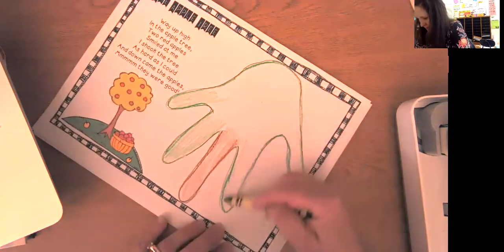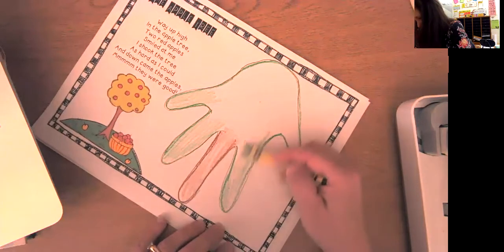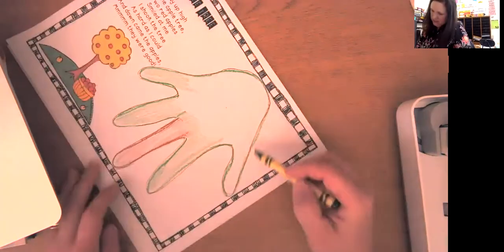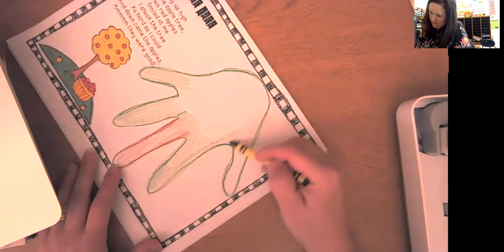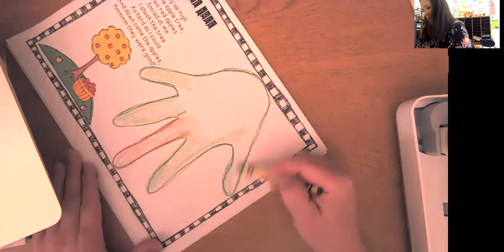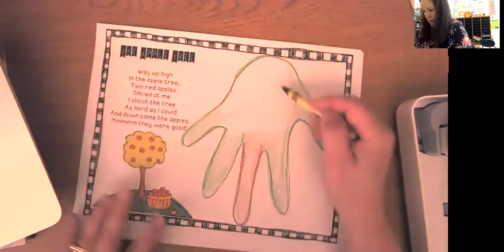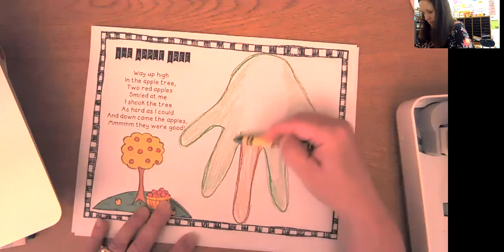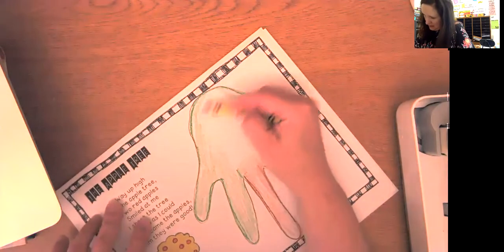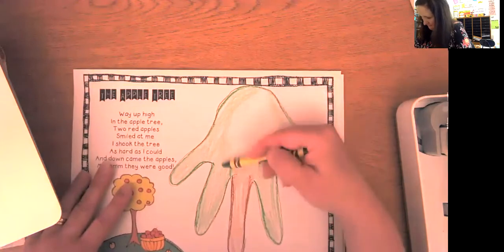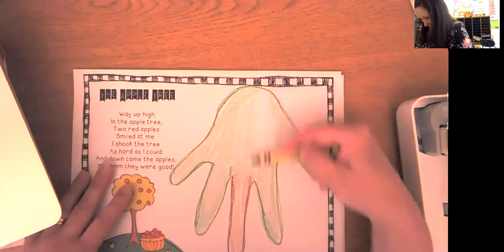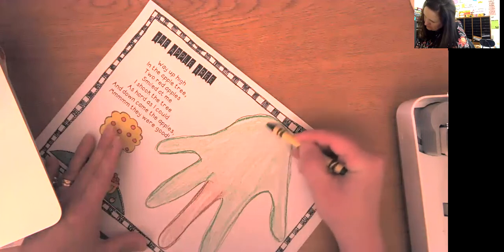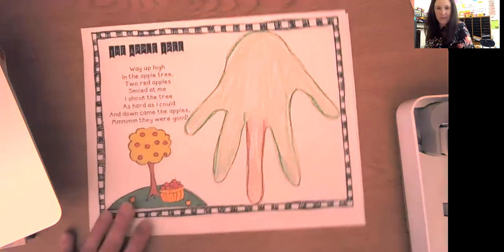So see, now can you start to see my tree? My cute little tree that we see in the fall, right? And we go apple picking with our parents in September. So, okay. So, almost done with the green. And you can see my tree.